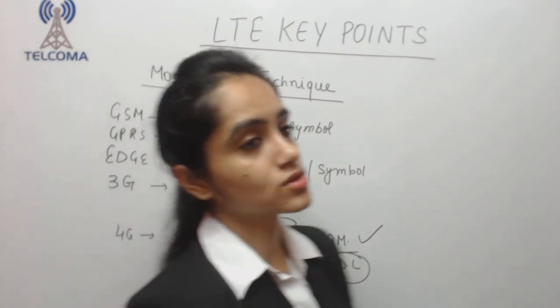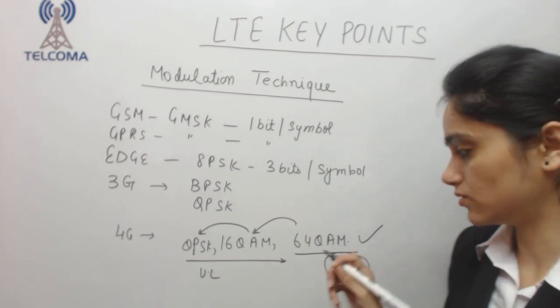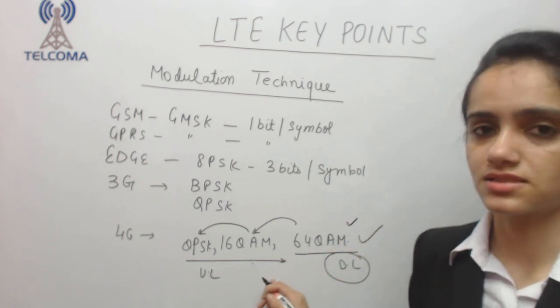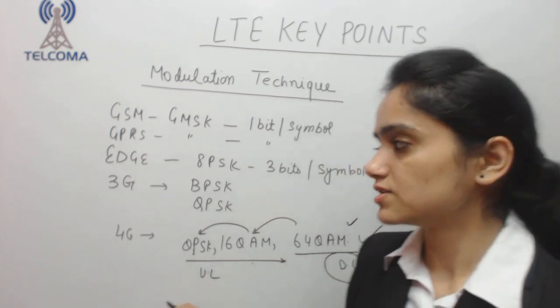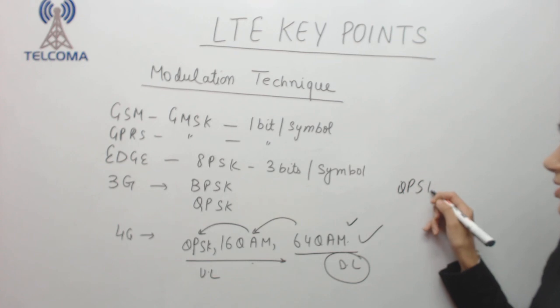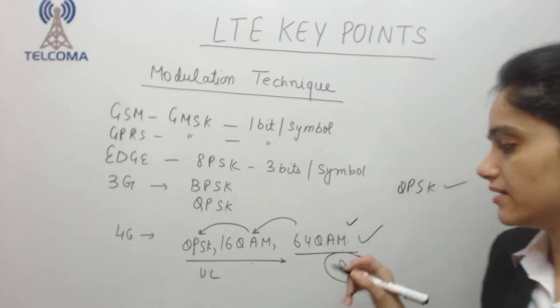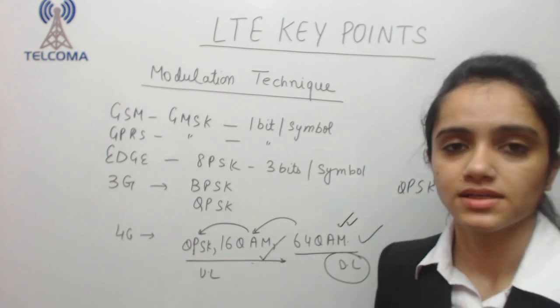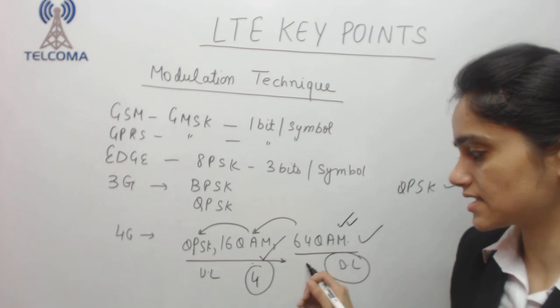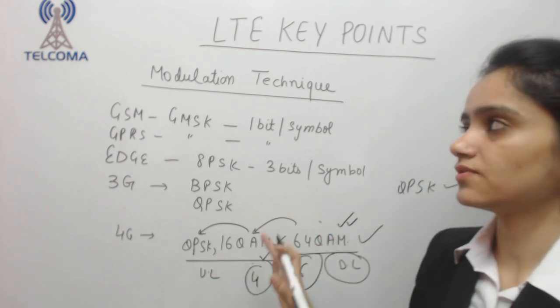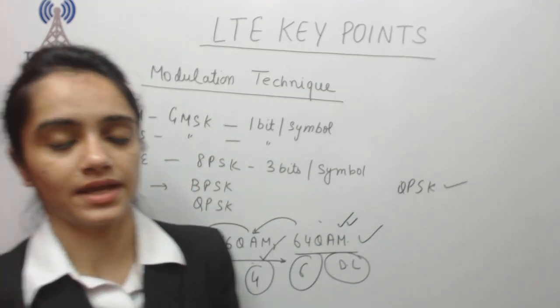This QAM is also dependent on the UE category. If we have UE category 5 then downloading 64 QAM we have uplink 16 and 64. But if we have lower category then we have to support this one. On a modulation scheme we can see that if I am on QPSK I will receive less data rate. Here 4 bits are modulated per symbol. Here 6 bits are modulated per symbol. So these are the various different modulation techniques which are used in LTE. Thank you so much.